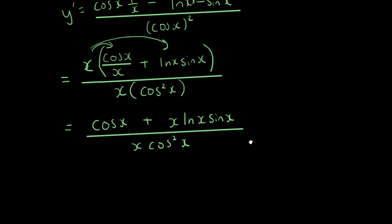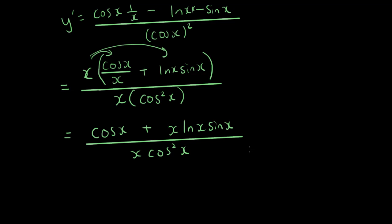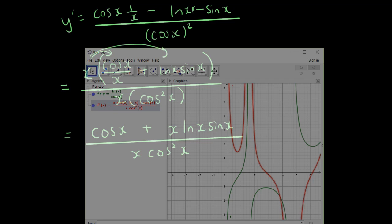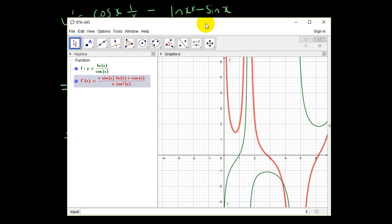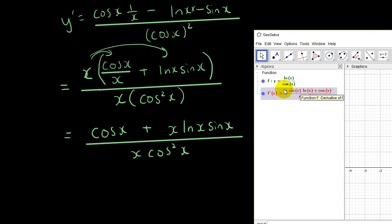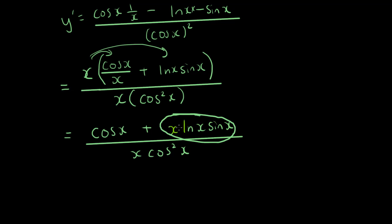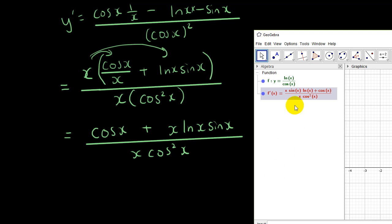So that's my final answer. Let's check that in GeoGebra again and see if it matches. We have x sin x ln x on top, and we have x cos squared x on the bottom. So it does match.